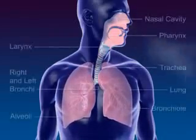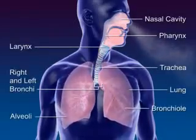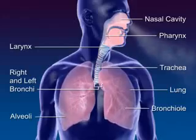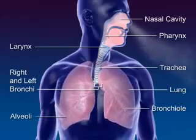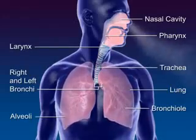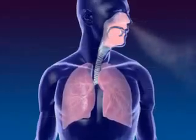The respiratory system moves air through the nose, pharynx, larynx, trachea, and bronchus to the alveoli, where the gas exchange between oxygen and carbon dioxide occurs.